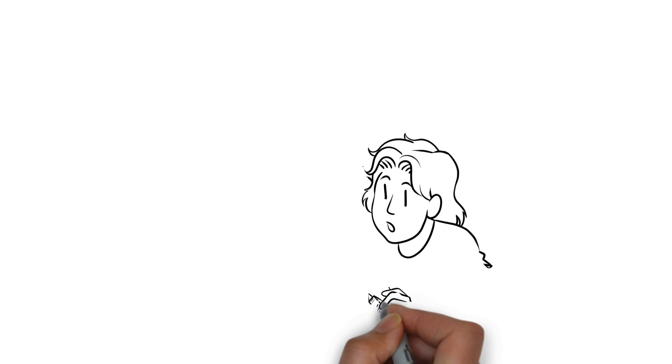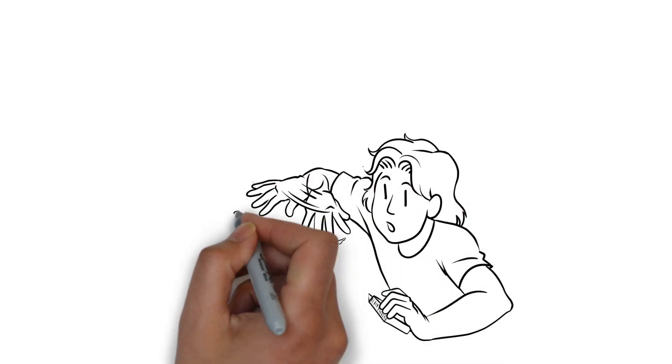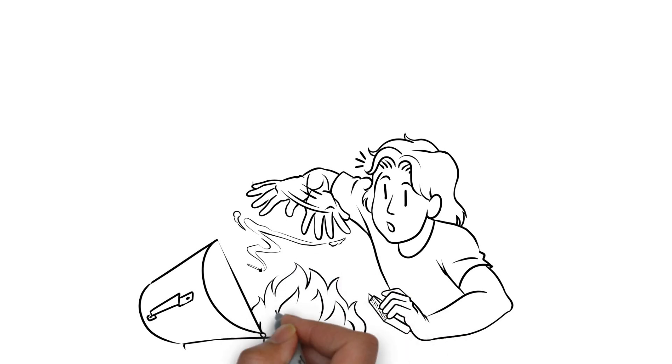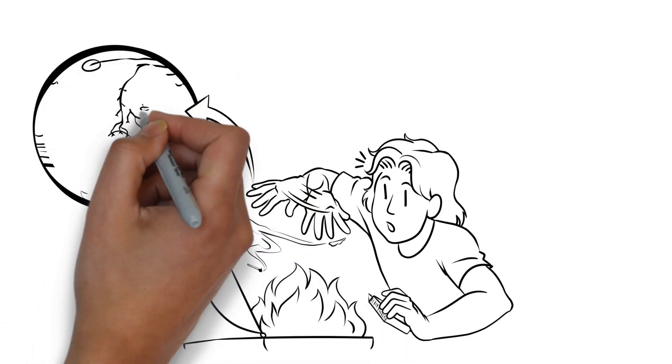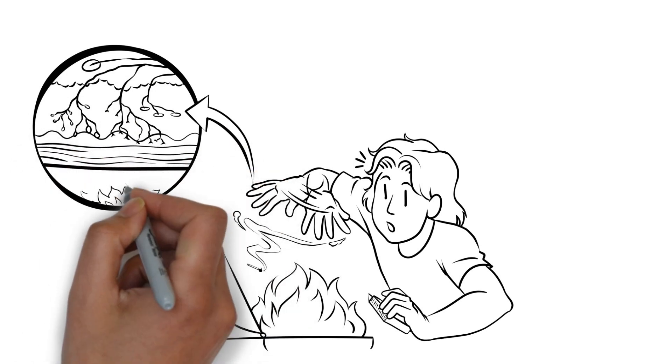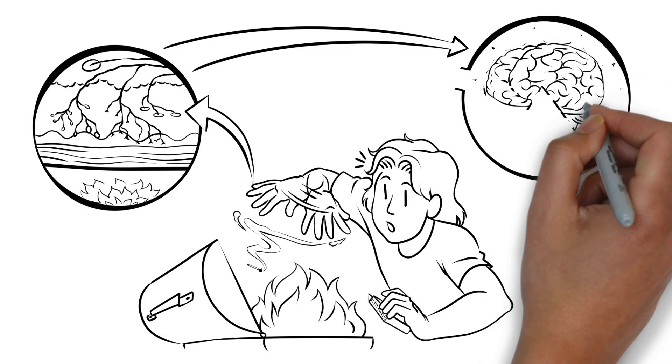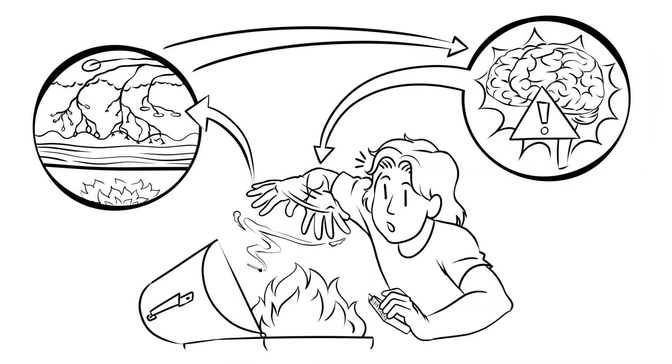In a normal situation, mechanoreceptors in the skin send signals to the brain based on the environment. Those signals are interpreted in the brain and appropriate motor commands are then sent. In other words, you touch something hot and without conscious thought, the message is sent to the brain so it can say, move your hand.